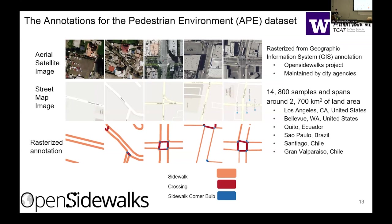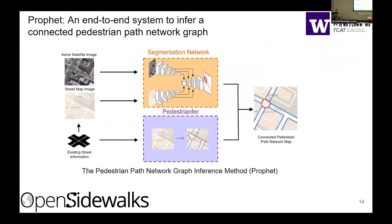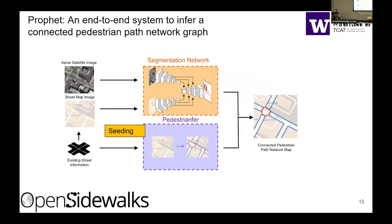Since pedestrian path network is our focus, we map all other classes — including buildings, roads, and vegetation — into background classes, but we can also add them back to the dataset using the same pipeline. Along with the dataset, we present an end-to-end system to infer a connected pedestrian path network graph, which we call system PROFIT, doing inference of a potential path network graph in three steps.